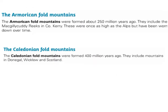The next period of folding is the Armorican fold mountains. They were formed around 250 million years ago. They include the McGillicuddy Reeks in County Kerry. These mountains were once as high as the Alps but have been worn down over time by weathering.